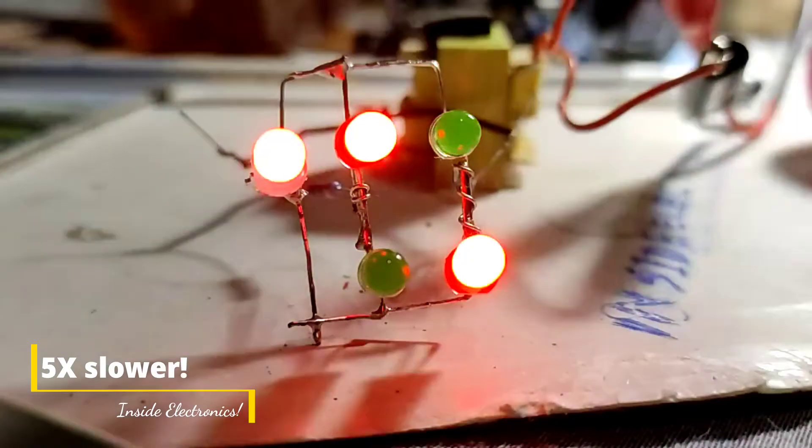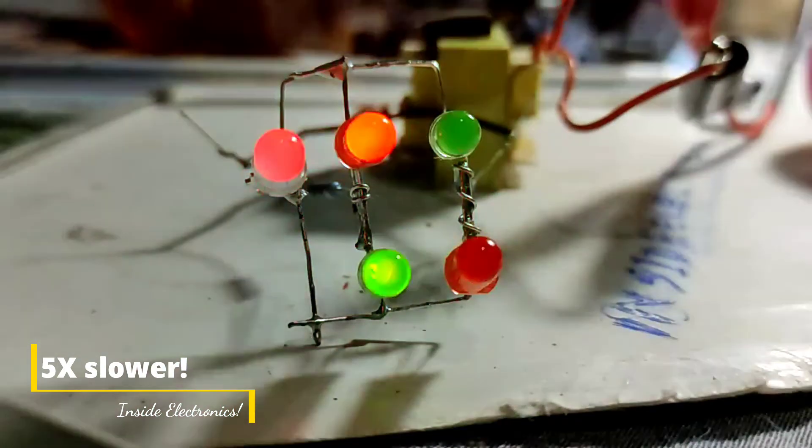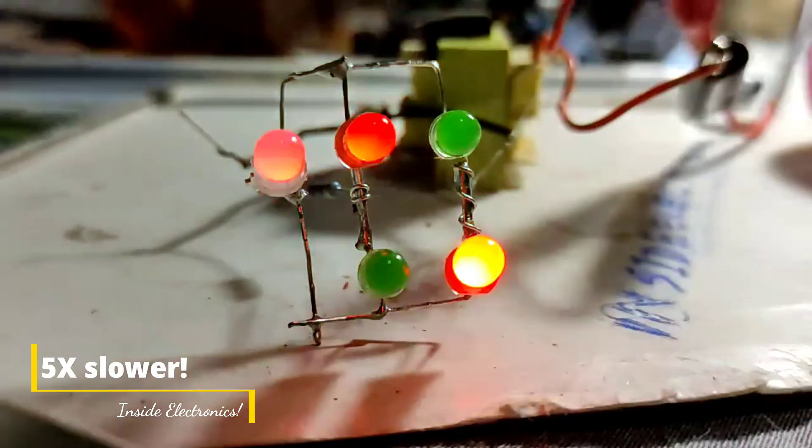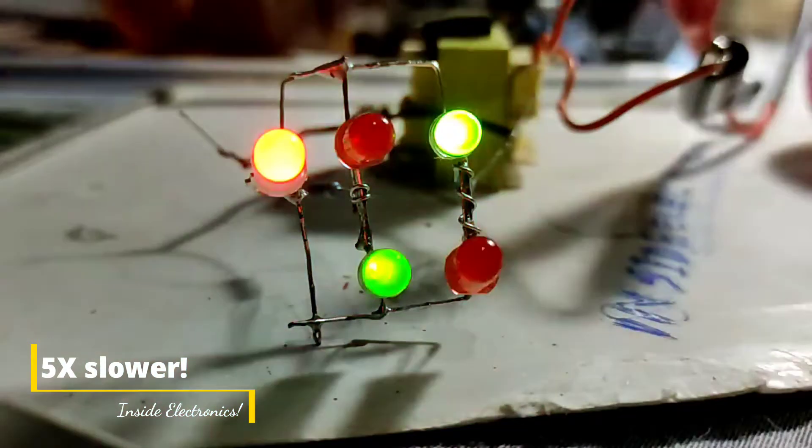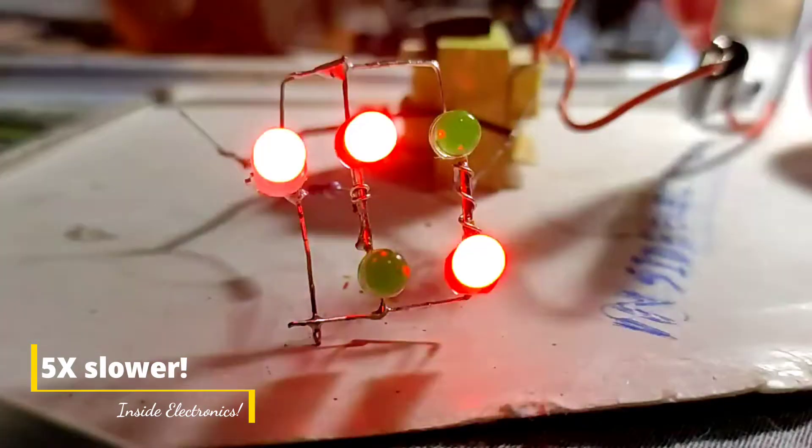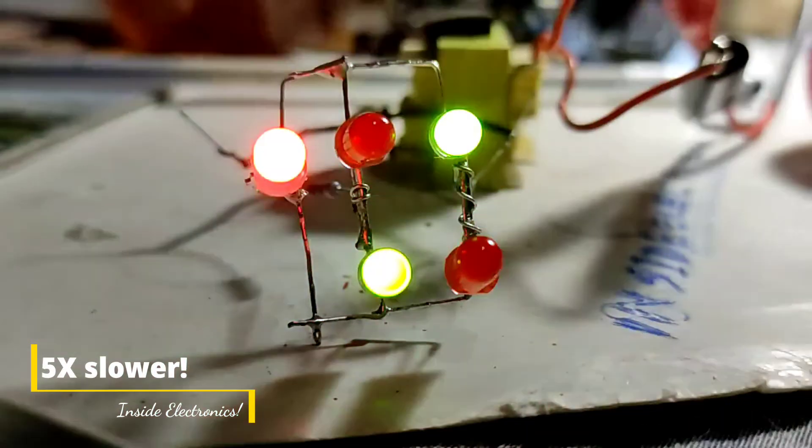Now I'm going to do the slow motion, and now I'm going to slow down the video to five times the actual speed. And now here, look at it - you can see exactly which pair is getting turned on and which pair are not on at any given time.